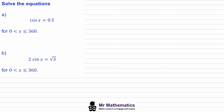Hi everybody. In this video I'm going to show you how to solve simple trigonometric equations. In our first example we've been given that cos x is equal to 0.5 and we've been asked to work out the value of x within the range of 0 to 360. So if cos x is equal to 0.5 and we want x, then we need to apply the inverse operation of cos, which is arc cos, written as cos to the negative one, and we need to apply this to both sides.